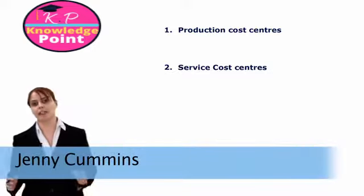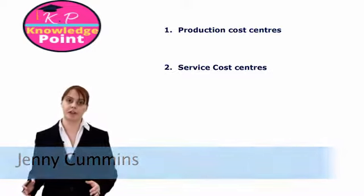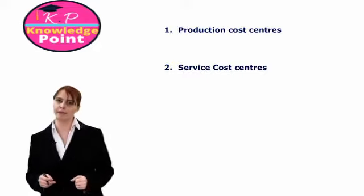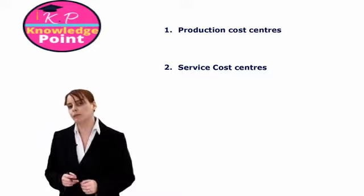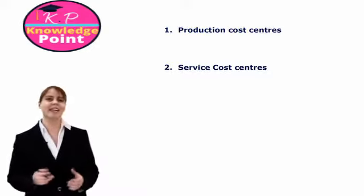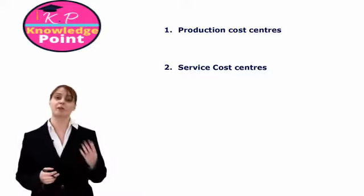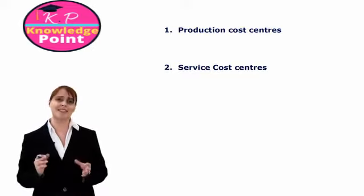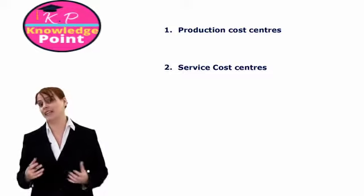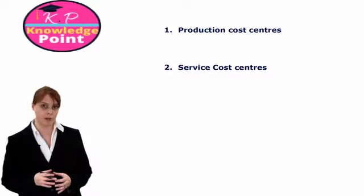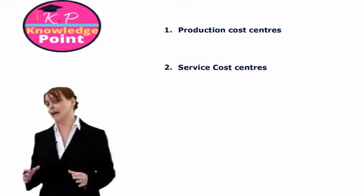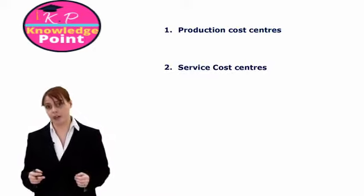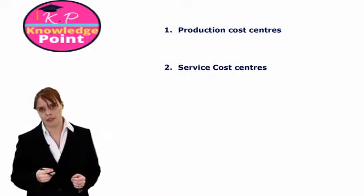Now we know how to allocate and apportion our production overheads to each of our cost centres within the factory environment. When we were doing our apportionment, we didn't really have to make too much of a distinction between our production cost centres and our service cost centres. But for step three, we are going to have to consider both our production cost centres and our service cost centres.